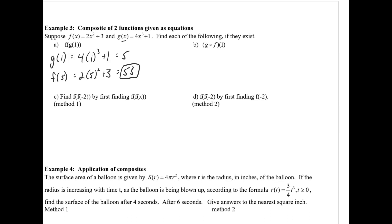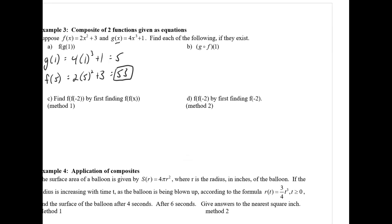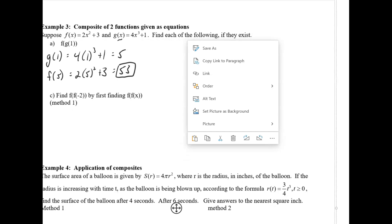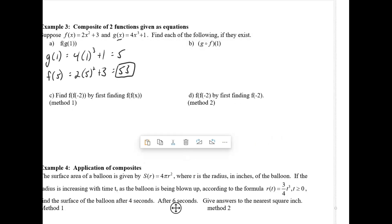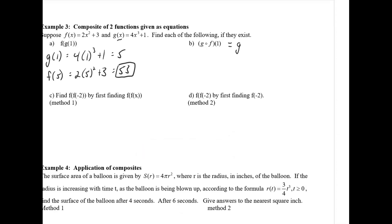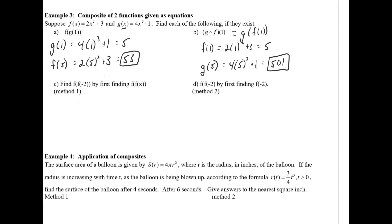Pause the video and try the next one. Remember that g circle f means g of f of 1. F of 1 was 5, and g of 5 is 501. That's your answer.